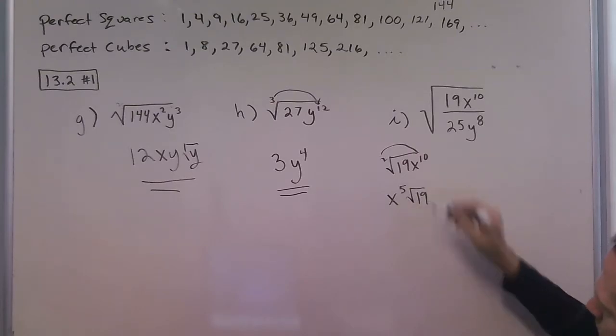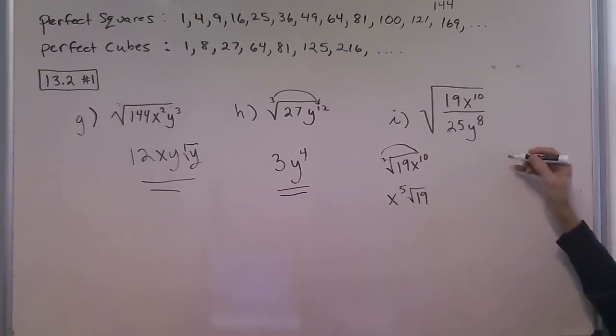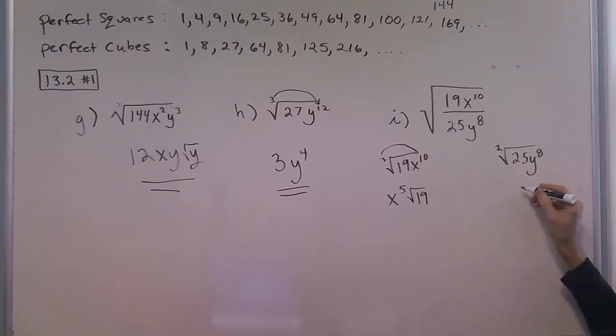Then the denominator, we have the square root of 25y to the eighth, which simplifies to 5y to the fourth.